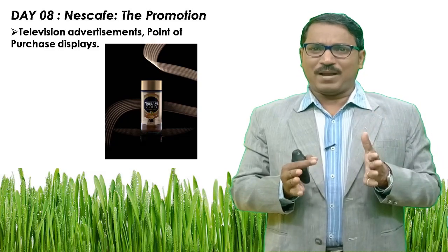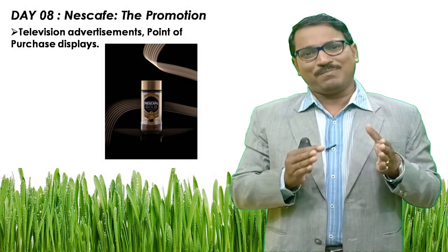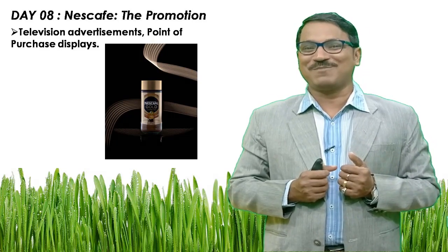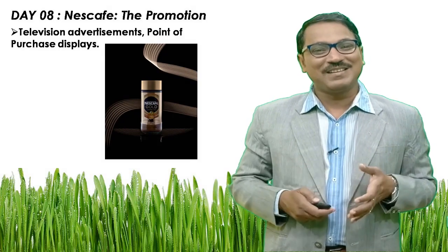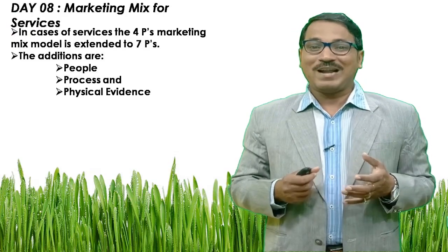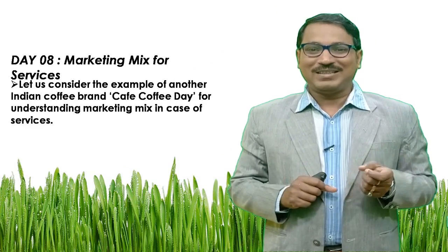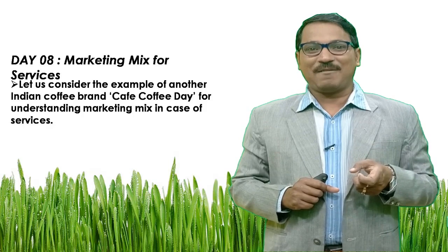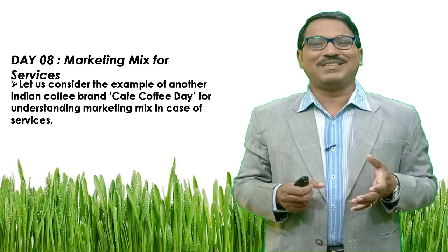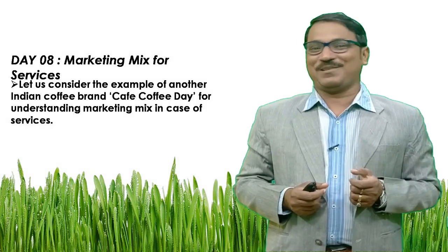The four P's are applicable for the marketing mix of physical goods. But in case of services, the four P's marketing mix model is extended to seven P's. The additions are people, process, and physical evidence. To make this distinction, I have taken another example of coffee, but in this case it is coffee which is supposed to be served in an outlet. Let us consider the example of another Indian coffee brand, Cafe Coffee Day, for understanding marketing mix in case of services.